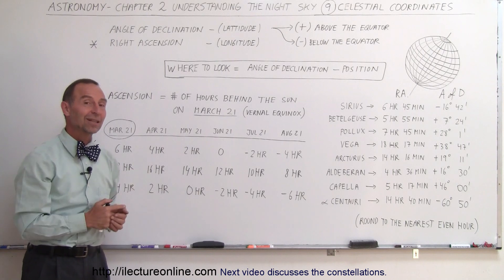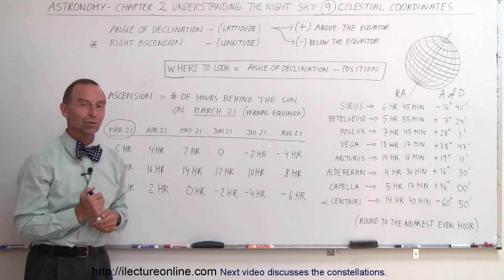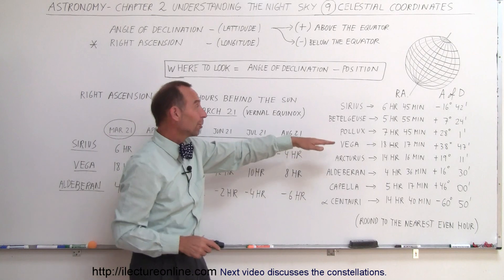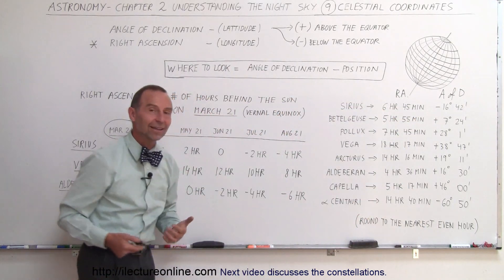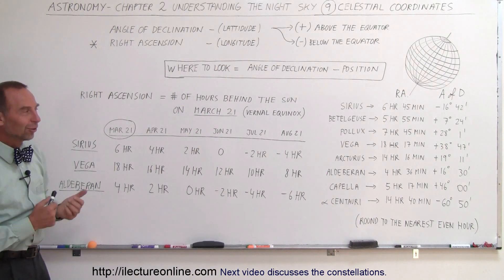Hopefully, this made it clear enough for you to find things, based upon what you'll find as far as, if you look up the right ascension and the angle of declination, you should be able to find anything in the sky, at any time of the year, using this principle.